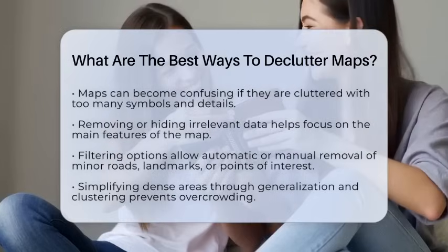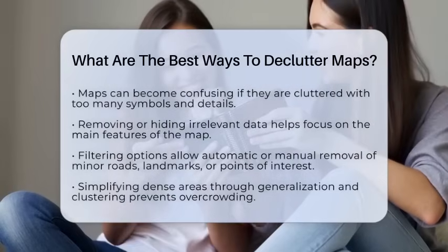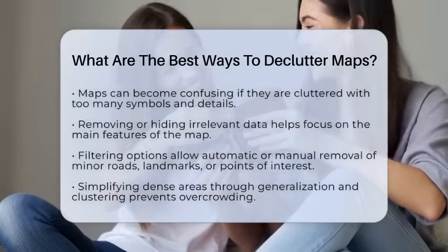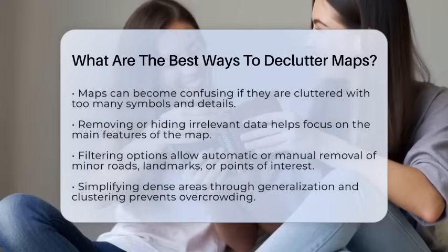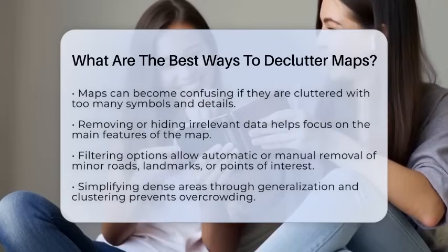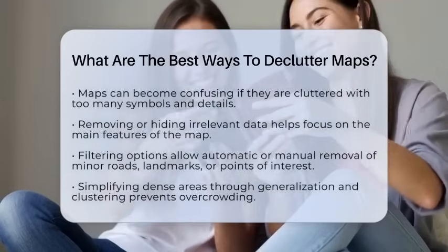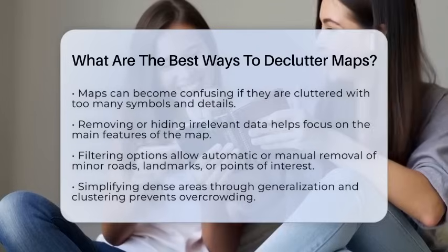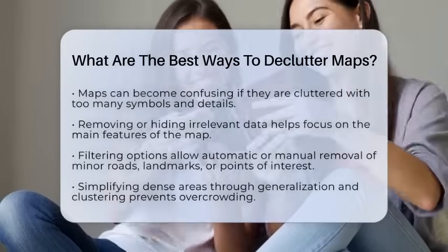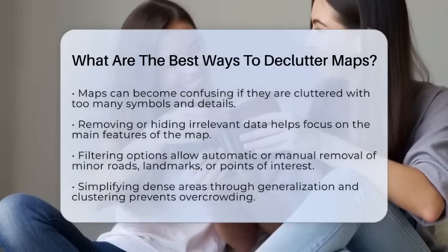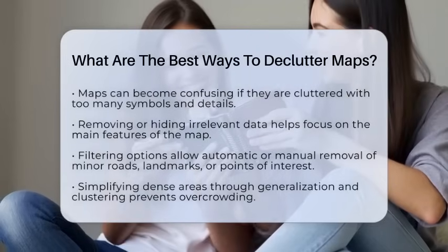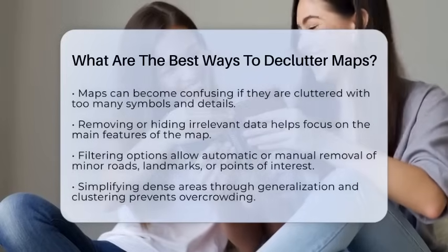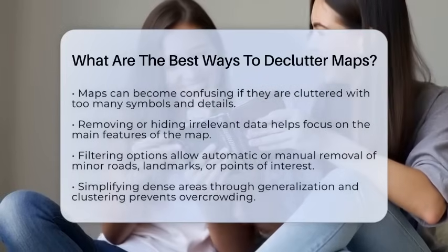First, filtering irrelevant data is key. Remove or hide points of interest or features that don't matter for your map's purpose. For example, if you're showing only major highways, hide small roads and minor landmarks. This reduces visual noise and makes the main features stand out. Many mapping tools let you do this automatically or manually, so you can focus on what really matters.